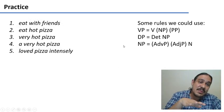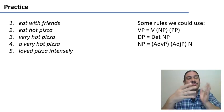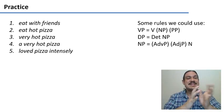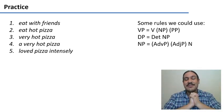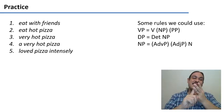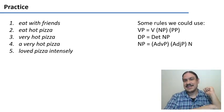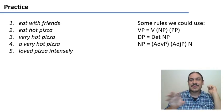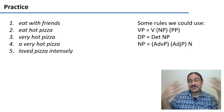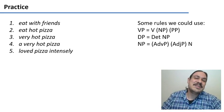Using the information we have from before and the examples of the trees we have so far, try to draw the trees for these phrases: 'eat with friends,' 'eat hot pizza,' 'very hot pizza,' 'a very hot pizza,' 'love pizza intensely.' A summary of the rules is there on the right. Go for it — please pause the video.